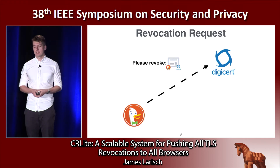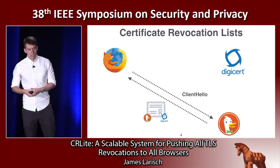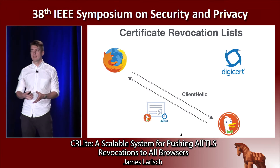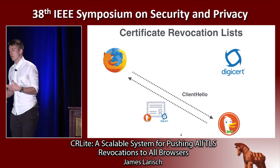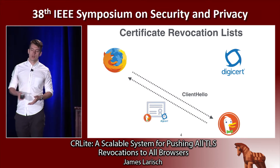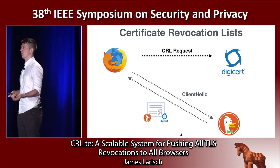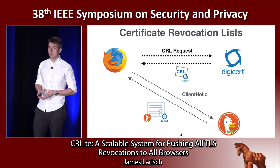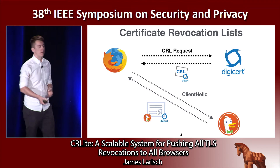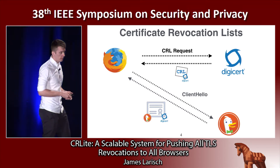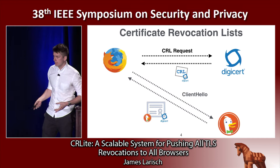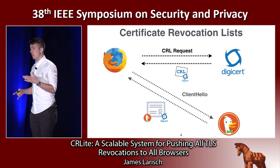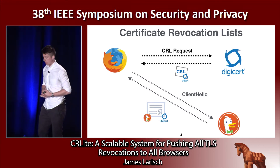But how do browsers get access to this information? The first mechanism is called certificate revocation lists. Prior to completing the TLS handshake, the browser asks the issuing certificate authority for a list of all of their revoked certificates, and the certificate authority responds with this list. The browser checks to see if the website's certificate is on the list, and if so, it blocks access. But making a CRL request for every TLS handshake is untenable because Apple, for example, has a 76 megabyte CRL.